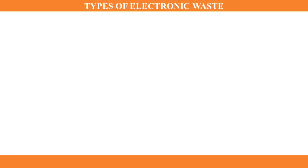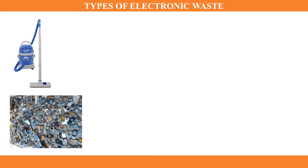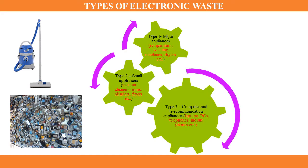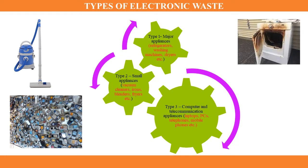Let's see the types of electronic waste. We can divide them into three types. The first type is major appliances, for example refrigerators, washing machines, dryers, etc. The second type is small appliances, for example vacuum cleaners, irons, blenders, fryers, etc. The third type is computer and telecommunication appliances, for example laptops, PCs, telephones, mobile phones, etc.